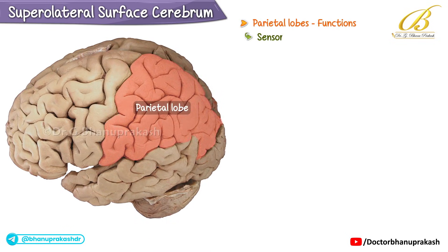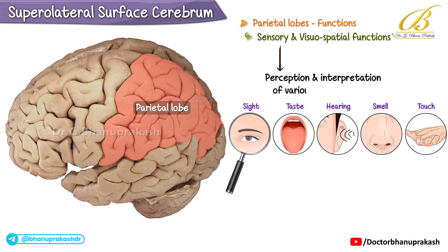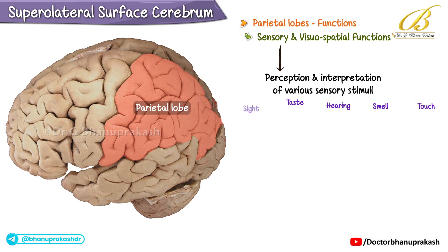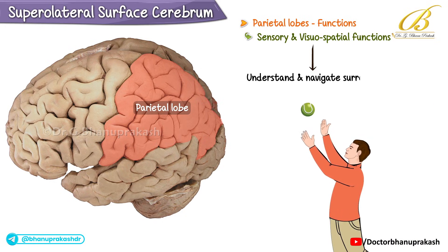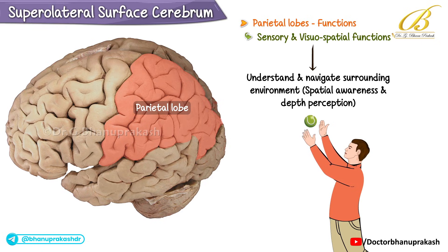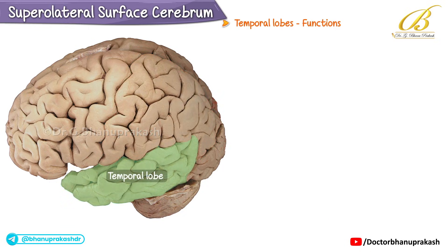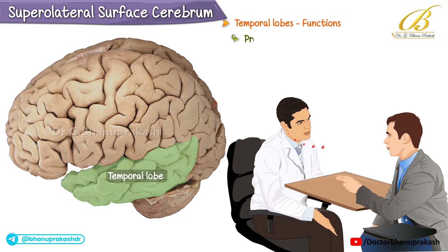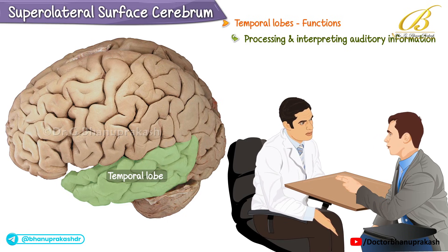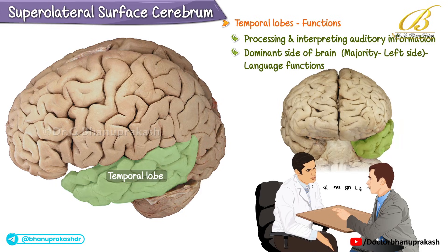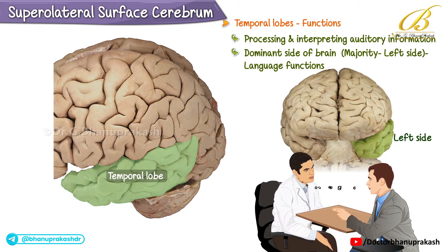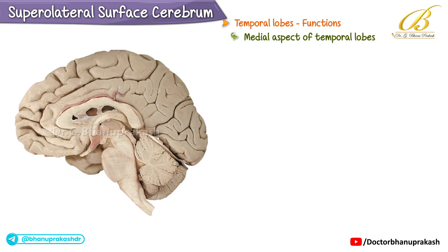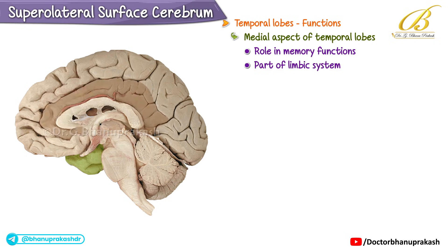The parietal lobes have sensory and visuospatial functions, integrating multiple sensory inputs to allow for the perception and interpretation of various sensory stimuli. Visuospatial functions enable an individual to understand and navigate the surrounding environment, including spatial awareness and depth perception. The temporal lobes are closely associated with the auditory system, processing auditory information including the sense of hearing. On the dominant side — typically the left — the temporal lobes are involved in language functions. The medial aspect of the temporal lobes plays a significant role in memory and is part of the limbic system, involved in emotion and memory regulation.